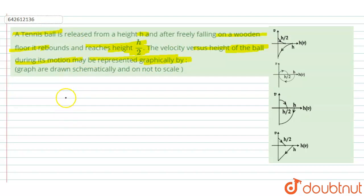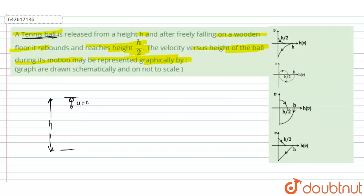Firstly, consider the situation. This is height h. The tennis ball is free falling, so initially u is equal to 0 and acceleration is equal to g. When this ball reaches the ground, it has some velocity v.